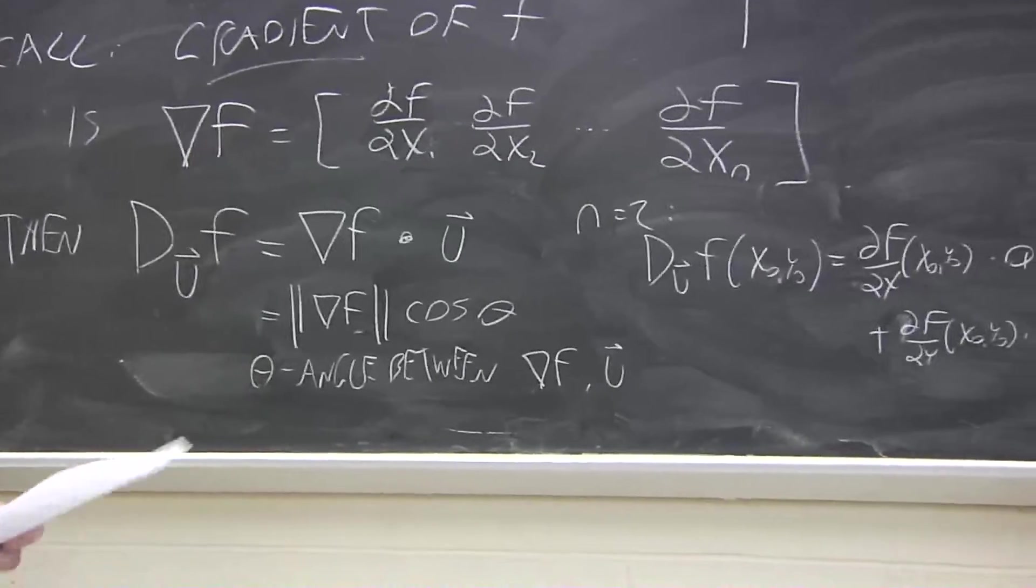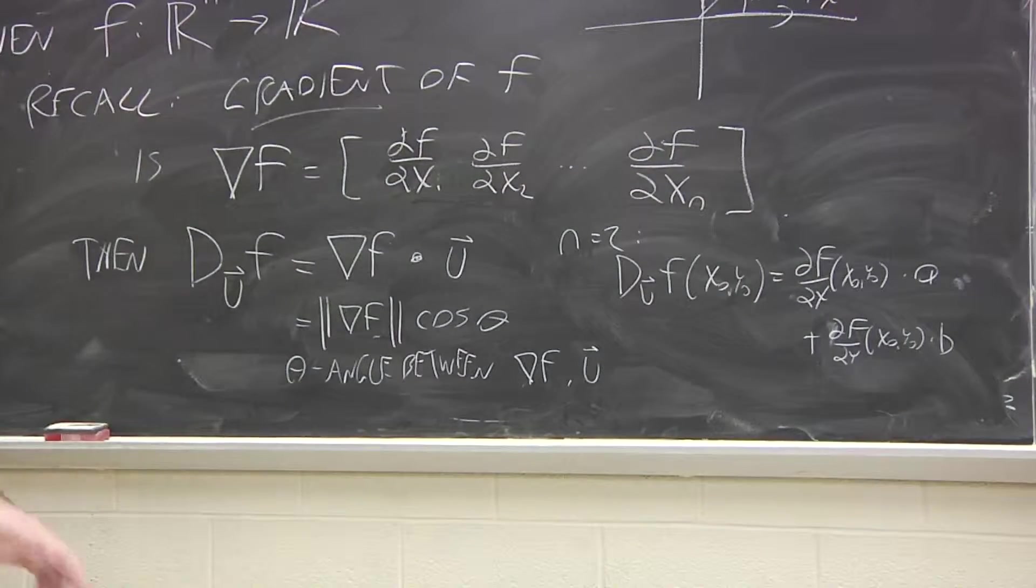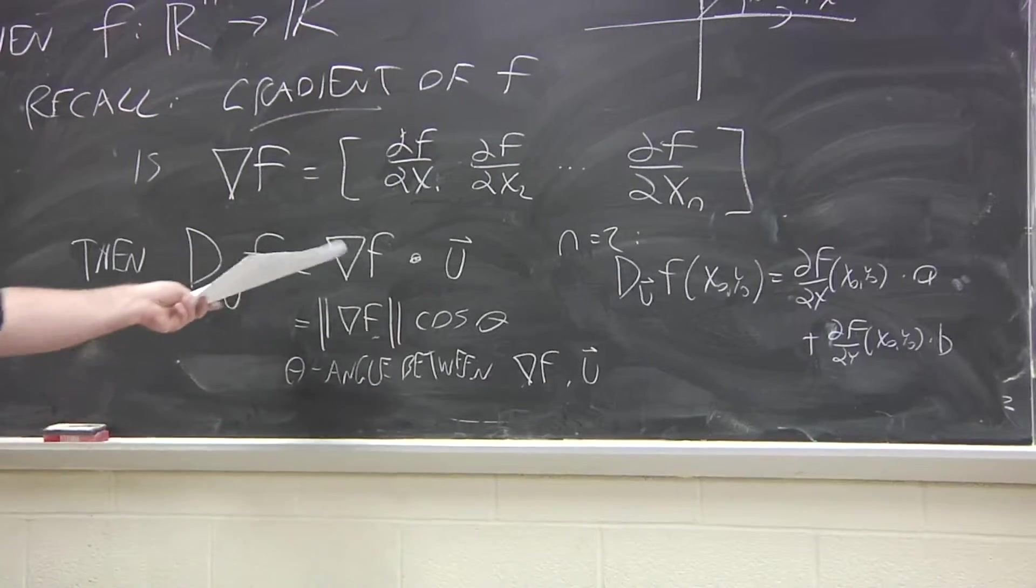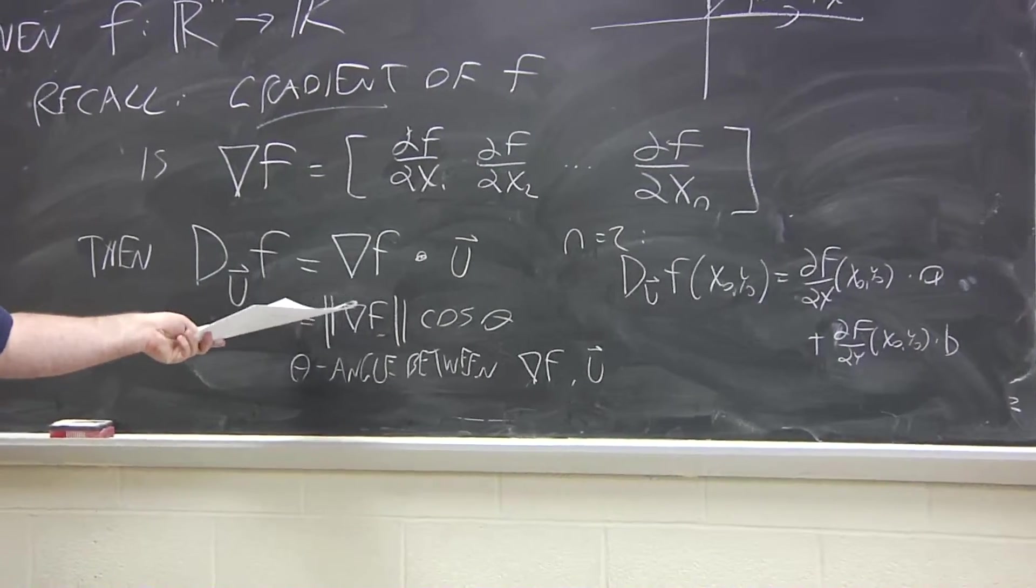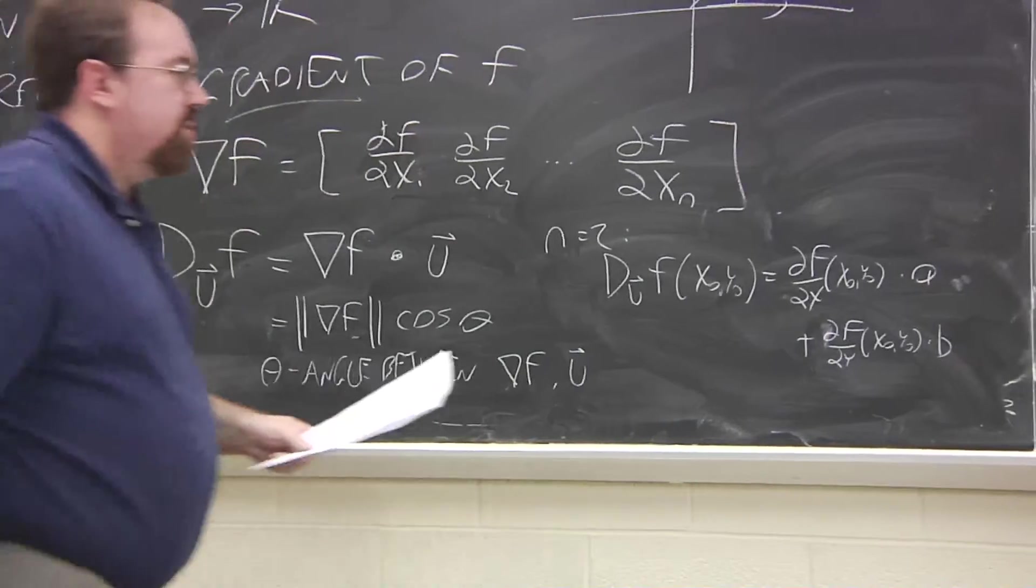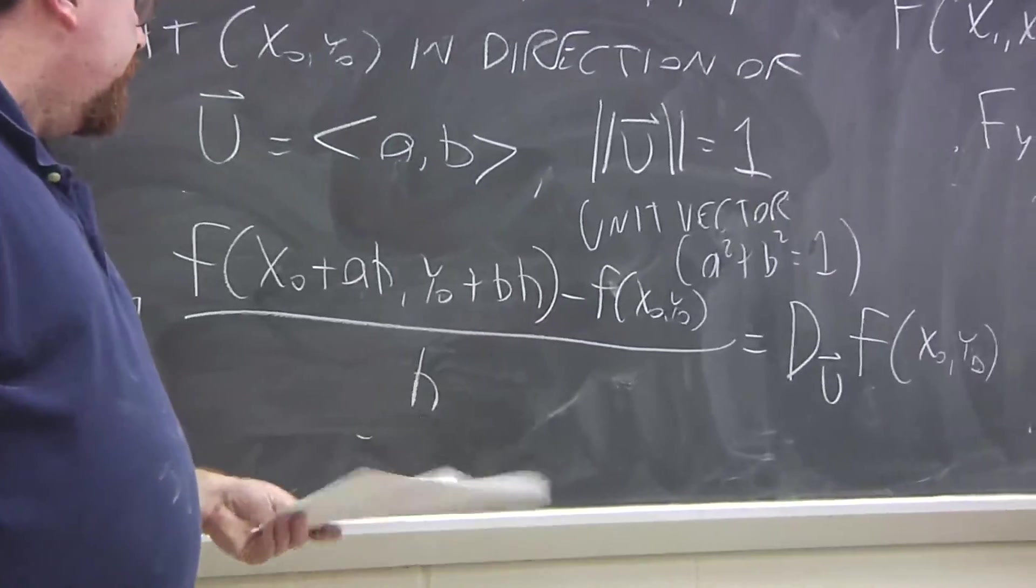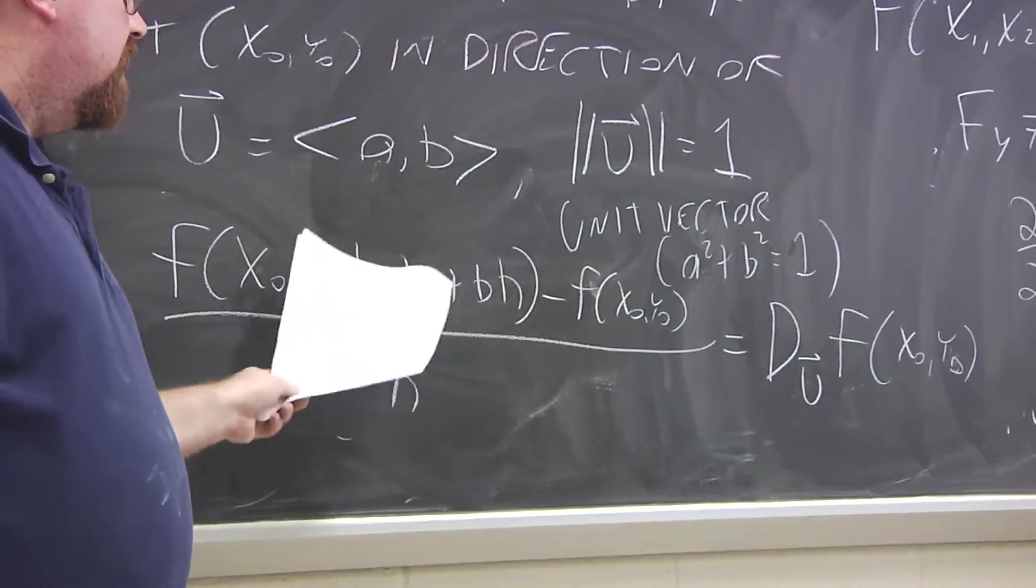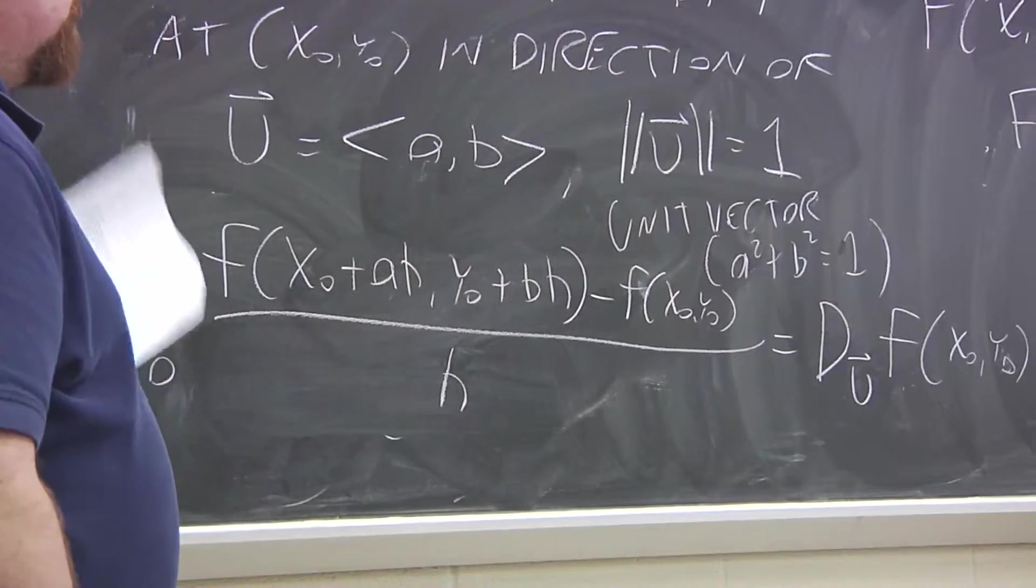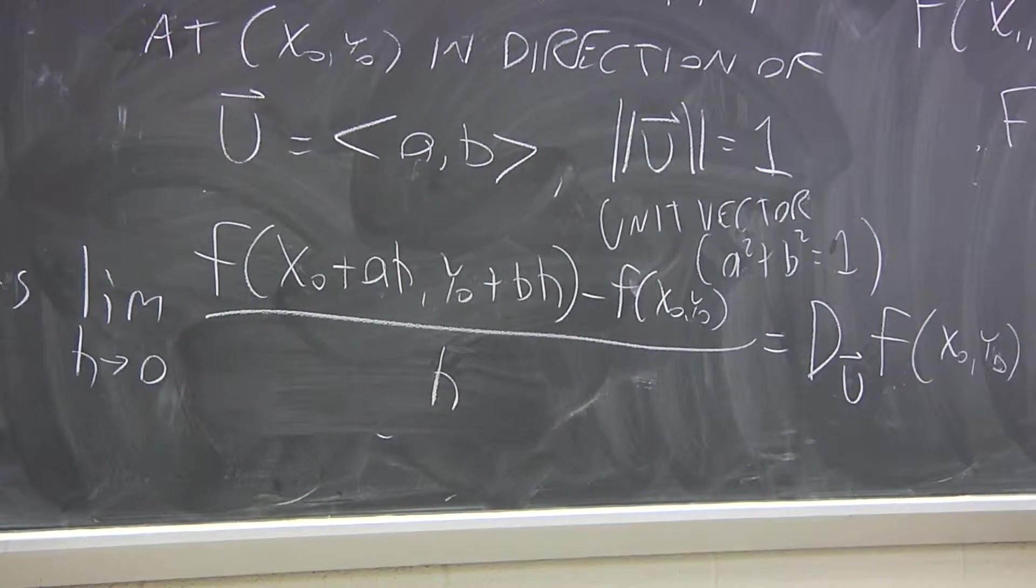So, once you have partial derivatives, then you'll have no problem computing the directional derivatives in any direction. As far as where this comes from, I've worked it out in the notes for this two-variable case. All you need to do is you use the add-subtract trick in order to take this expression, and when you take the limit, you end up having the partial derivatives with respect to x and y pop right out.